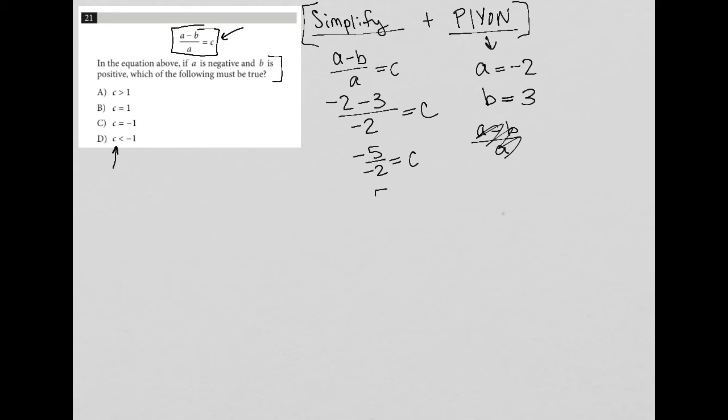And therefore, C is equal to actually positive five over two, because a negative divided by negative is a positive. Next step here is to look at the answer choices and see which one of those answer choices matches with what I just found by plugging in my own number and simplifying the fraction here.